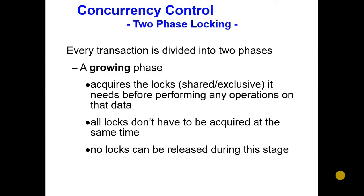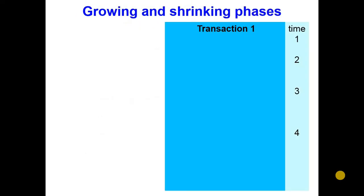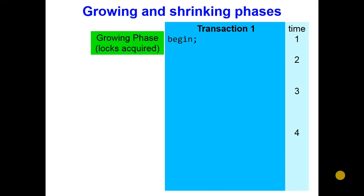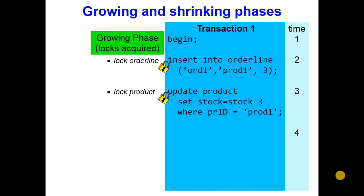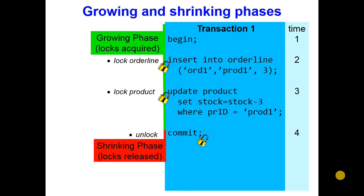Locking happens in several phases. We don't want to lock too much data at once, because if no one else can access any of the database while a transaction runs, it's very wasteful. So locks are acquired one bit at a time: the transaction begins, then there is a growing period when more and more locks are acquired on the data — locking order line, then locking product. On commit, the locks are released. This means another transaction could access 'product' while transaction one is still accessing 'order line,' which would be permitted.